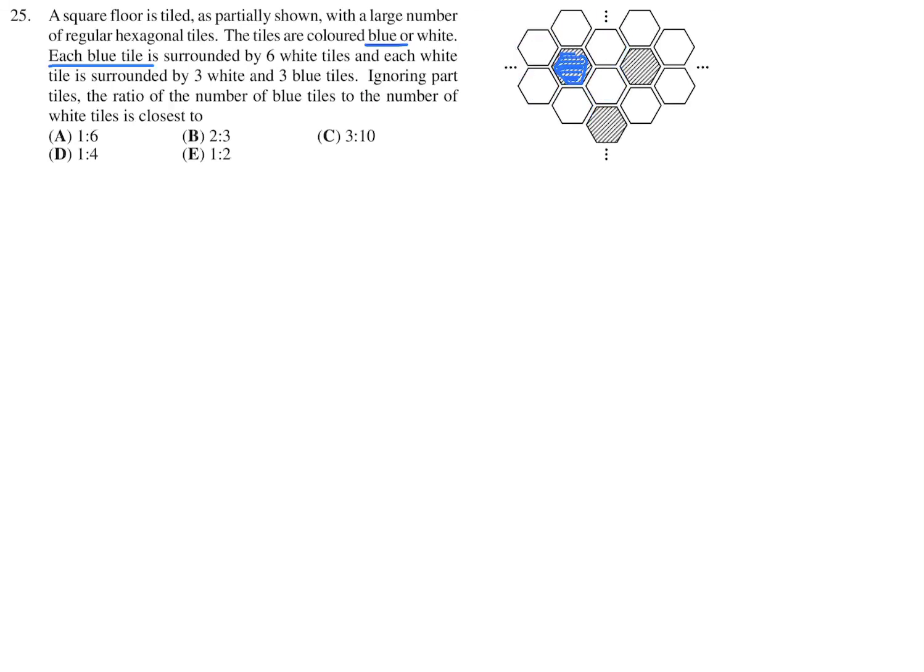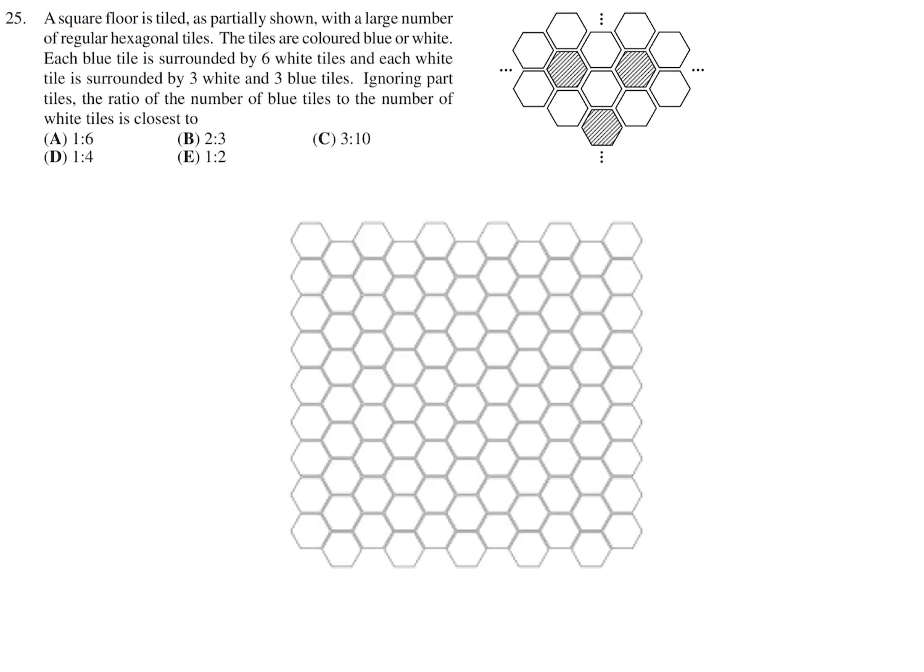And then they also tell you that each white tile is surrounded by three white and three blue. So for example, this is a white tile. It's surrounded by three white. One, two, three. And it's surrounded by three blue. One, two, three. So they're saying they don't give us any dimensions of the square floor. They just tell us it's a square. But I guess if you have a pretty decent sized square and you have this kind of pattern, how many blue will you have and how many white will you have? And then they want you to figure out the ratio.